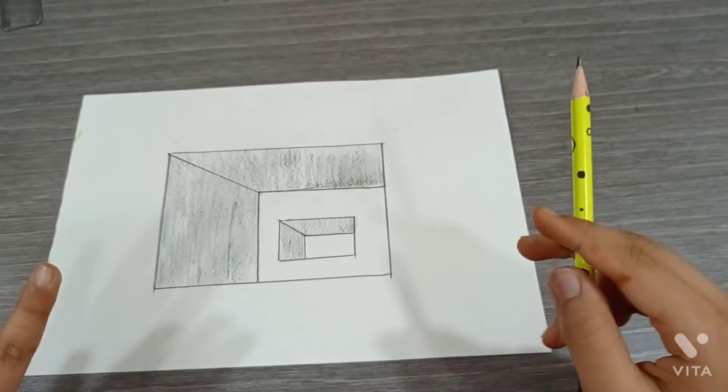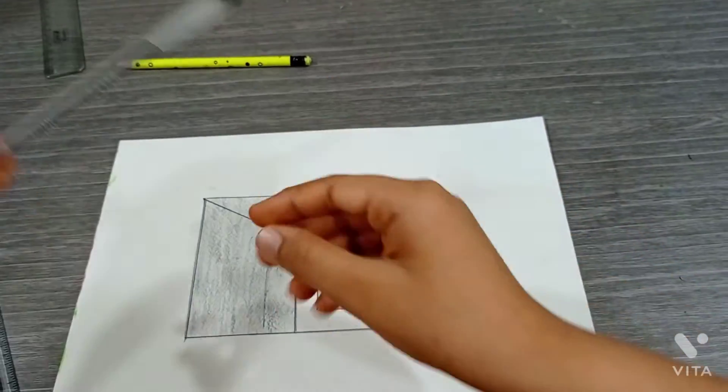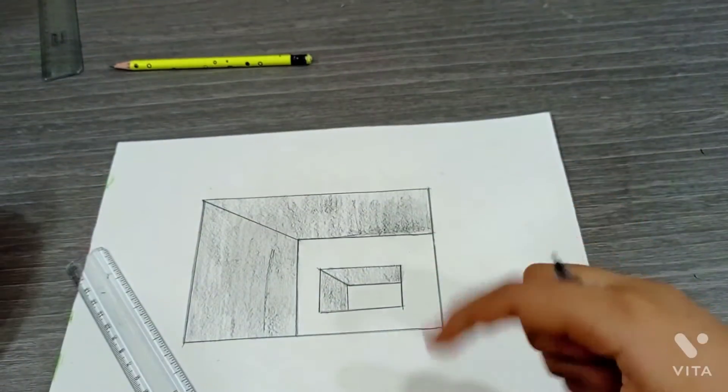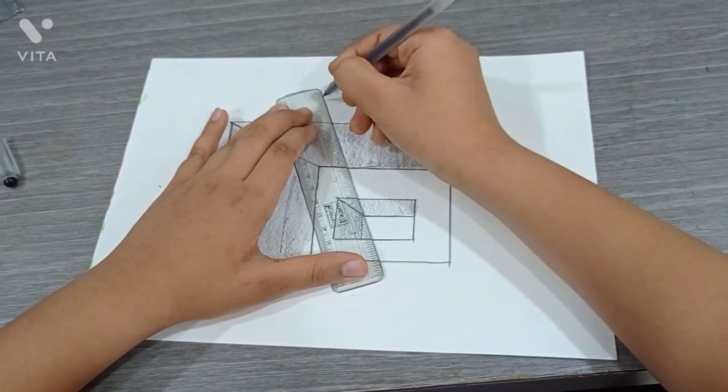We are done with our work. Now we have to draw a ladder. For drawing the ladder, take a black pen and this scale. I'll draw the ladder now. Take from this point to this point.